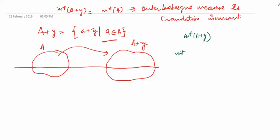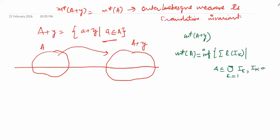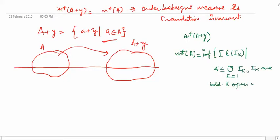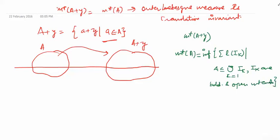Recall the definition of m* of a set A: it is the infimum of the summation of l(I_k) such that A is contained in the union from k=1 to infinity of I_k, where the I_k are open and bounded intervals. Whenever we need to compute m* of any set, we look for a cover of open and bounded intervals.